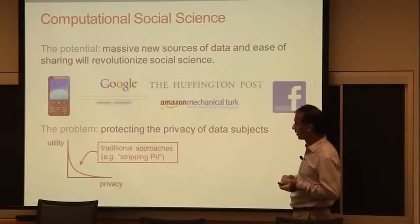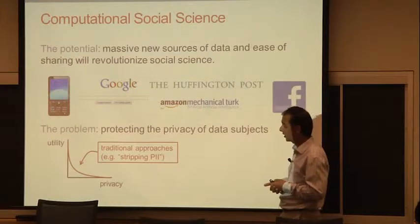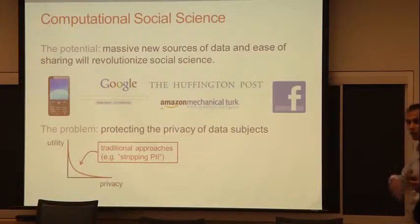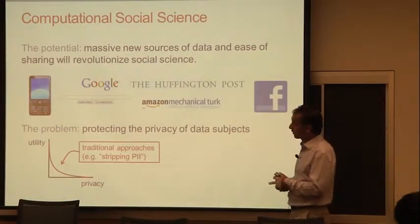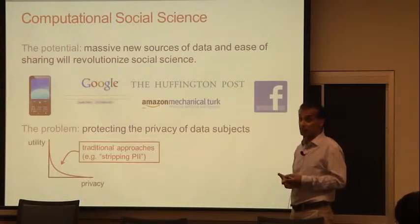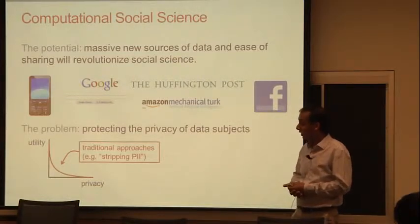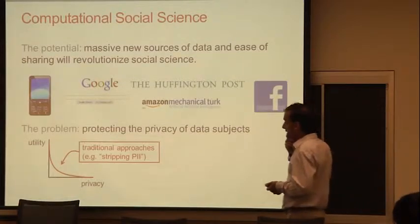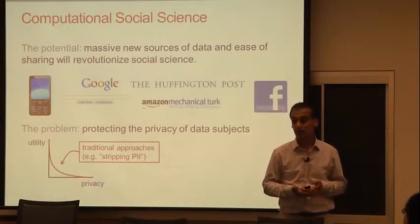So what's the traditional approach for dealing with privacy, not just in social science but in all human subjects research? It's to strip PII — personally identifying information — from the data set. You remove obvious identifiers: name, address, social security number, maybe exact date of birth, and so on. And what you're left with looks like an anonymous data set. You might hope that you can now share that data freely without any privacy concerns.